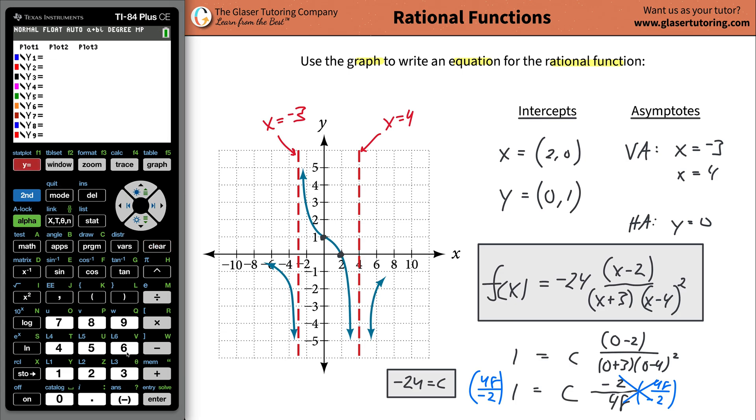Now you can go and check. Plug in your function: negative 24 times, then keep the numerator in parentheses. I'm going to do double parentheses because I have some further complication down here with many parentheses in the denominator. So x minus 2 divided by, open parentheses.